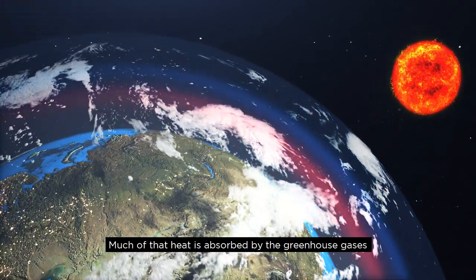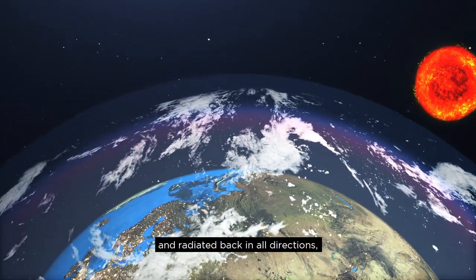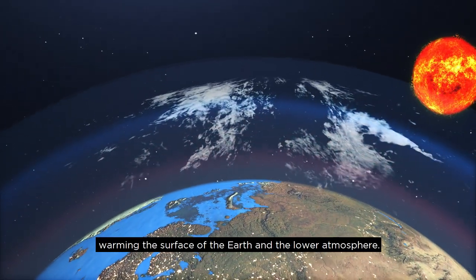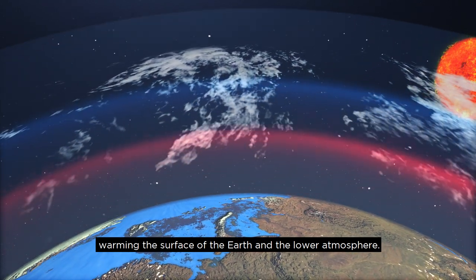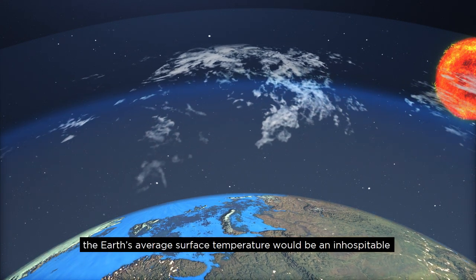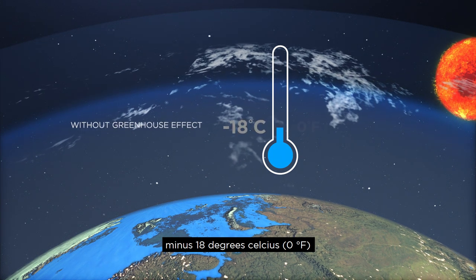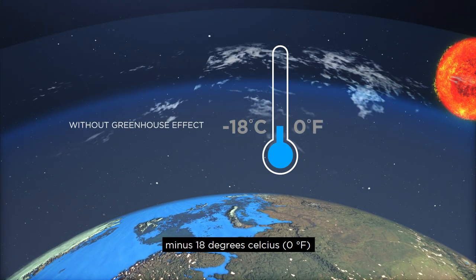Much of that heat is absorbed by greenhouse gases and radiated back in all directions, warming the surface of the Earth and the lower atmosphere. Without this natural greenhouse effect, the Earth's average surface temperature would be an inhospitable minus 18 degrees Celsius, zero degrees Fahrenheit,